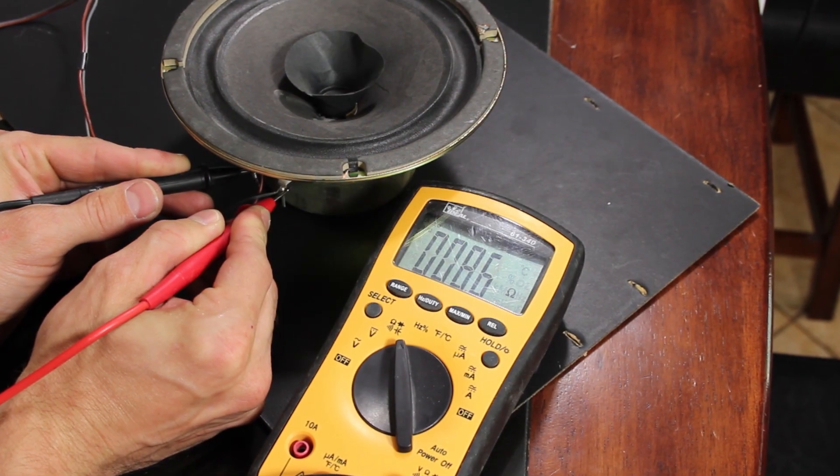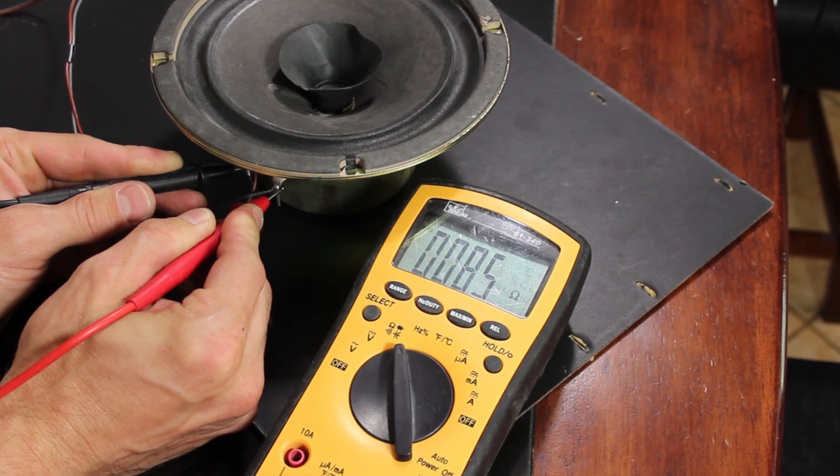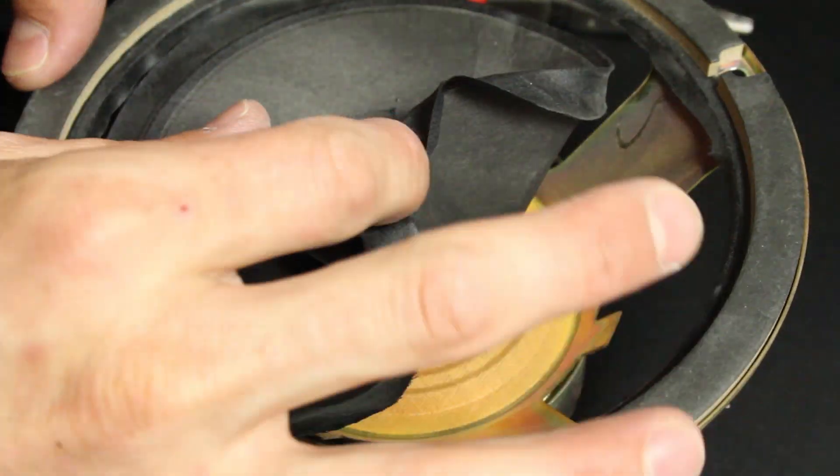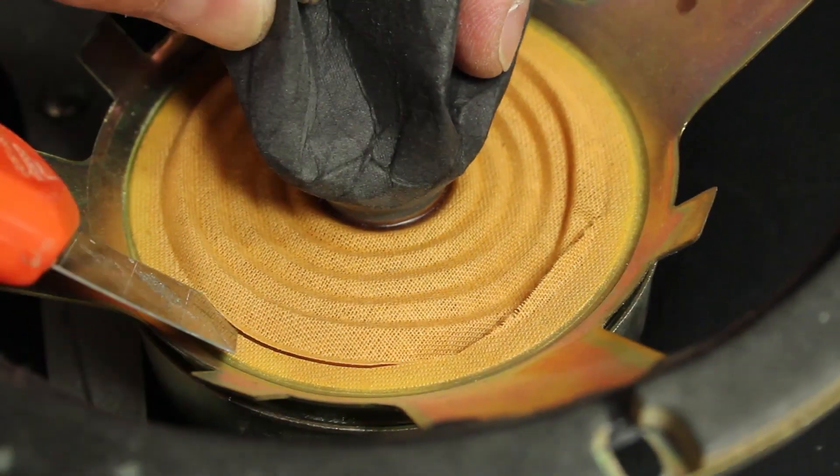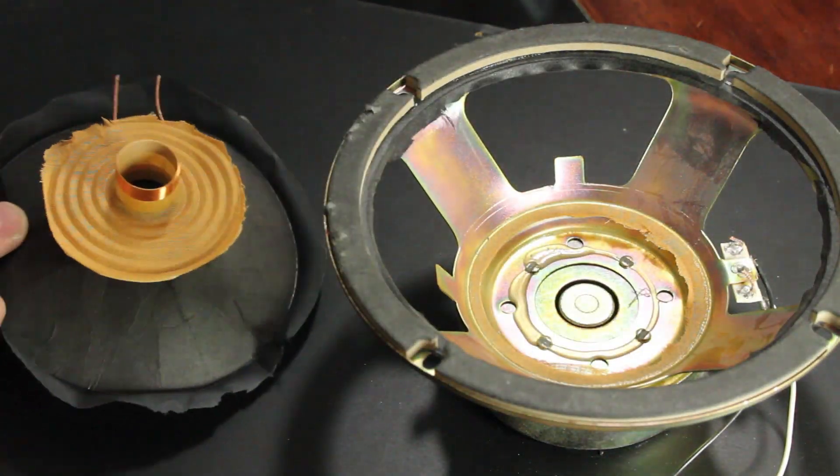I've still got these 8 ohm speakers from a TV I salvaged in a previous video, and I'll sacrifice this one in the name of discovery. I'll use a utility knife to cut the cone away from the surround, exposing the basket, as well as this yellow diaphragm known as a spider. I'll cut through that and snip these two wires, and I'm impressed at how simple a speaker really is.